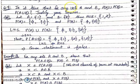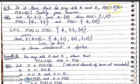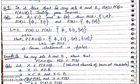So for the union, the left hand side is not equal to the right hand side, but for the intersection, it is true. When it is true, then we have to prove it.